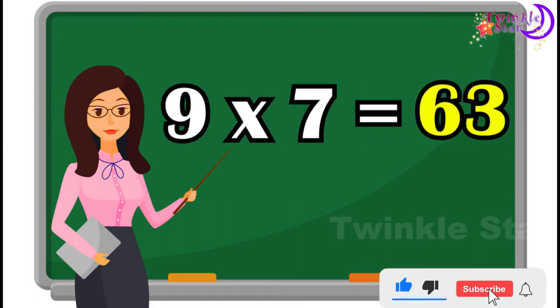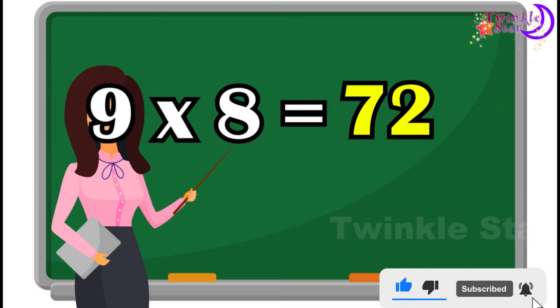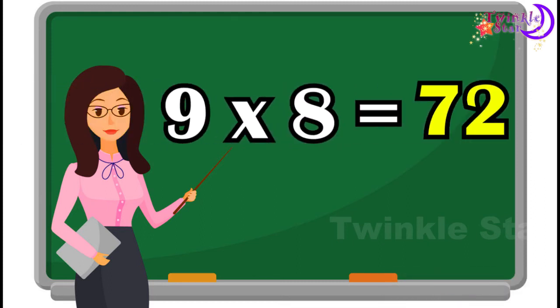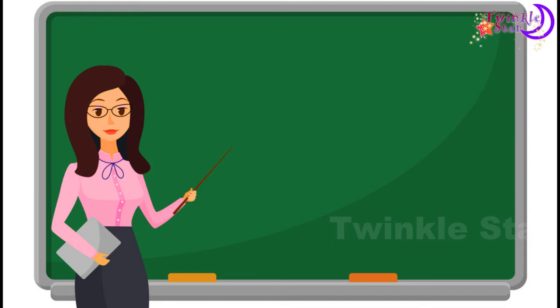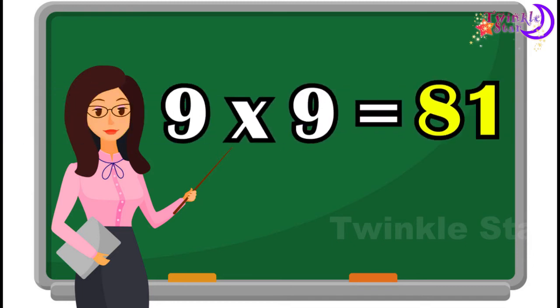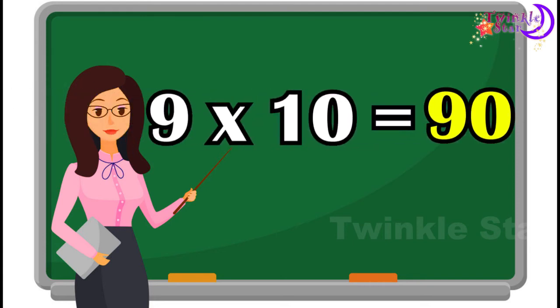9 7s are 63, 9 7s are 63, 9 8s are 72, 9 8s are 72, 9 9s are 81.